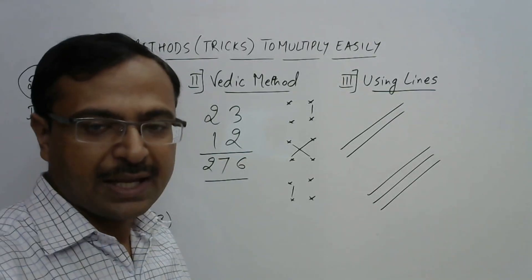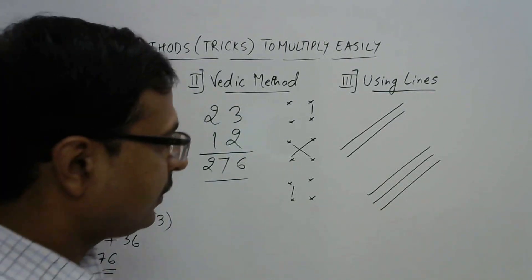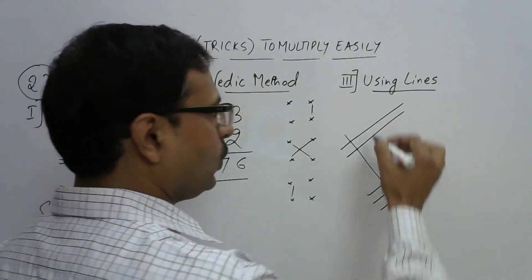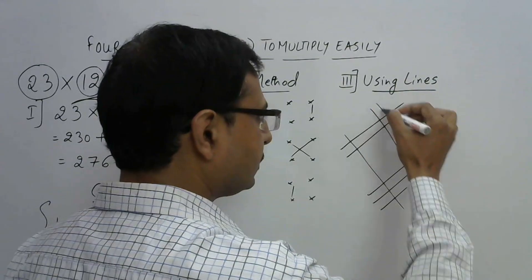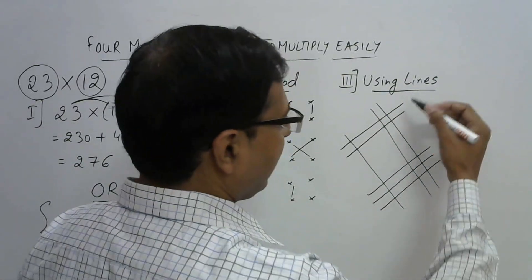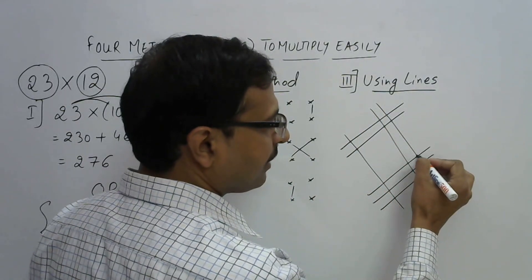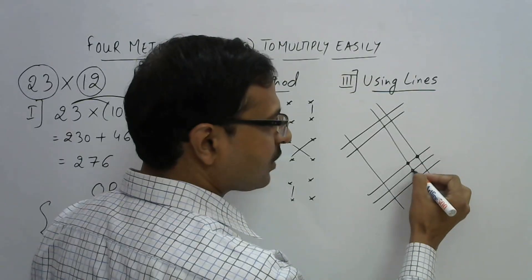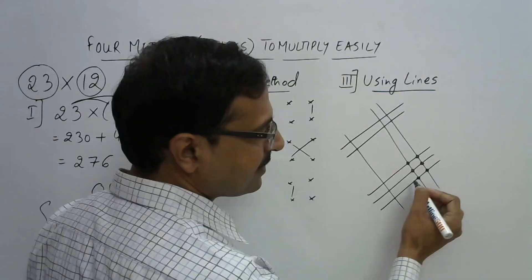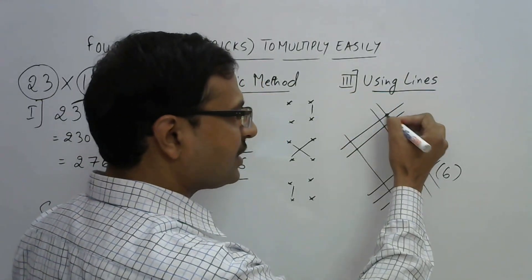So 12 means 1 and 2. So I will draw 1 line like this and 2 lines like this. Now you see we have the entire figure separated into 3 parts. Count the number of points of intersection of 2 lines here. So these are 6 points. So this is 6. Count the number of points of intersection here. This is 1, 2, 3, 4 and underneath this you have here also.